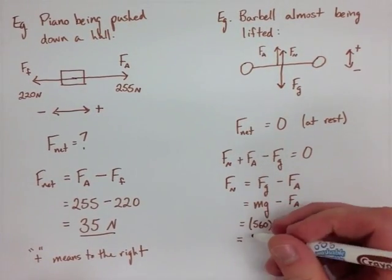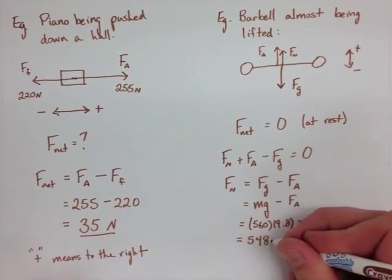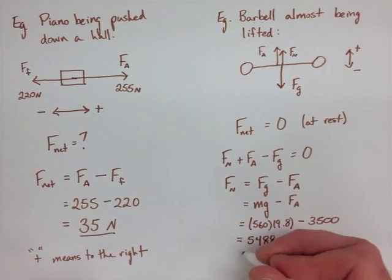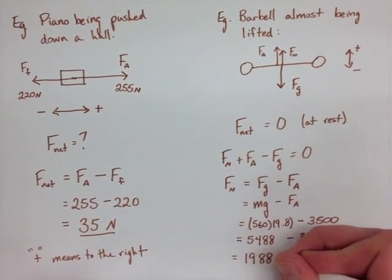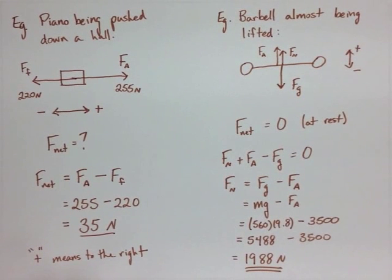And we end up getting 5488 minus 3500. And then our normal force is equal to 1988. Notice again that our force of gravity and our normal force are not equal to each other here. Our normal force is far smaller because we have an applied force as well.